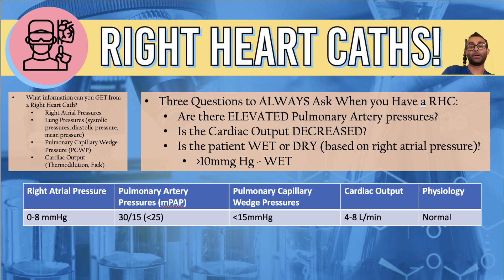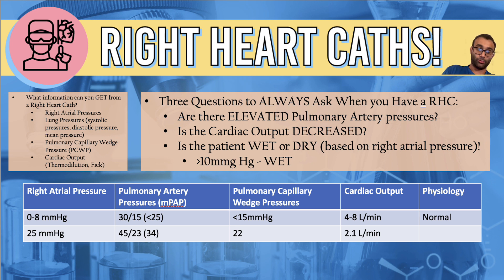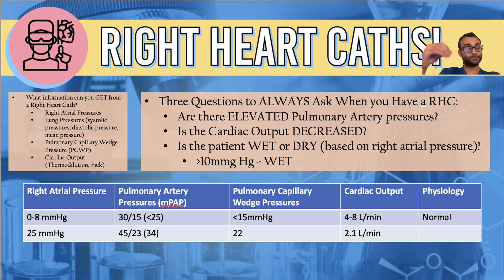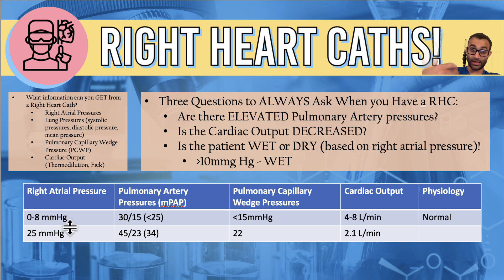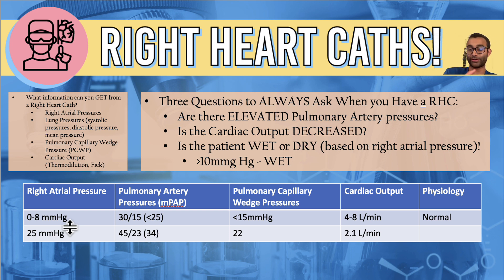Let's do an example. We do a right heart cath and see: right atrial pressure of 25, pulmonary artery pressure of 45 over 23 with a mean of around 34, pulmonary capillary wedge pressure of 22, and cardiac output of 2.1. Let's ask the three questions. Are there elevated pulmonary artery pressures? Yes — the mean is 34, clearly higher than 25. Is the cardiac output decreased? Yes — normally 4 to 8, and it's 2.1. Is the patient wet or dry? The patient is wet, because the right atrial pressure is very high at 25. You'd also want to check for lower extremity edema, elevated JVD, and hepatojugular reflex on physical exam.